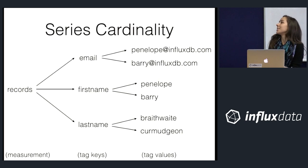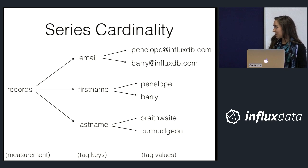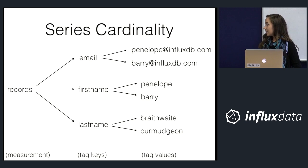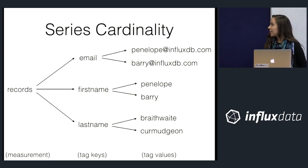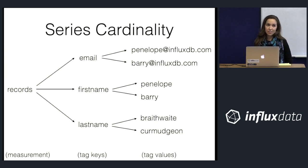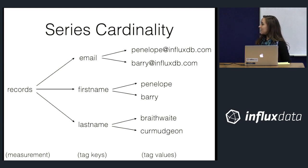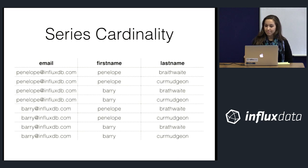Let's go into an example to think about this on a deeper level. We have a simple dataset with one measurement called 'records', which has three tag keys: email, first name, and last name. Each tag key has two tag values. When you first hear the definition of series cardinality — all combinations of measurement and tag sets — it might be tempting to calculate every possible combination: 2 times 2 times 2, giving you a series cardinality of 8.